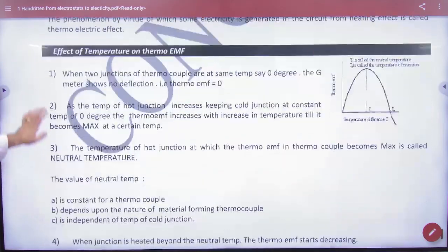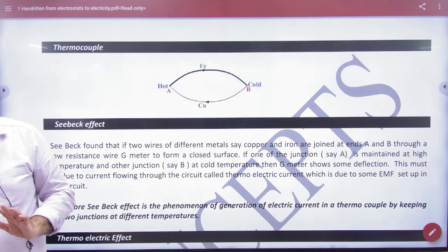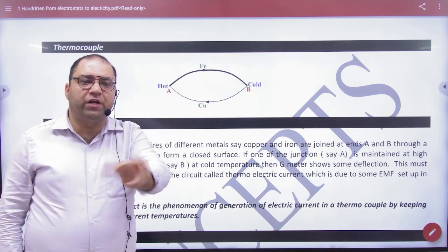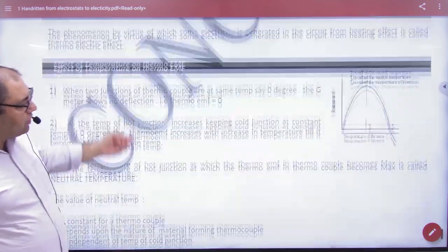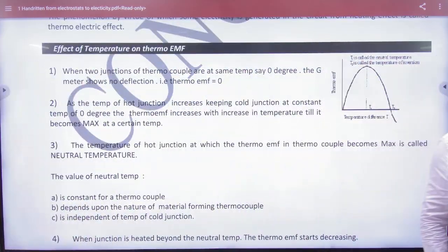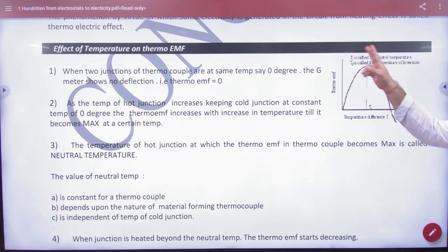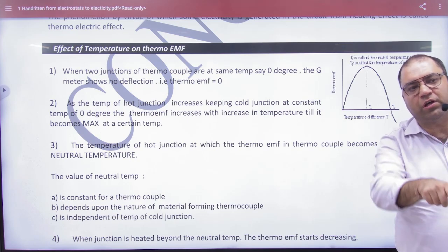If I take the cold junction to 0 degrees Celsius and start increasing the hot junction temperature, the temperature difference will increase between hot and cold. I want to see this - thermo-EMF. Thermo-EMF means that EMF is generated because of thermocouple. Thermocouple's EMF and temperature difference, we represent with Seebeck effect. If I plot them, this is observed for any thermocouple.